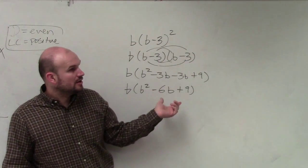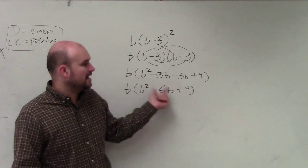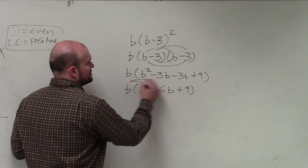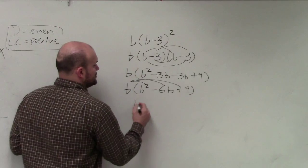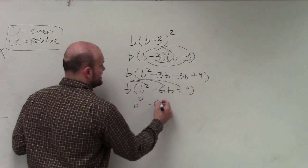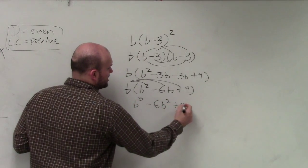OK. So when we multiply them, Tyler, now what we can apply is the distributive property with a monomial. So we get b cubed minus 6b squared plus 9b.